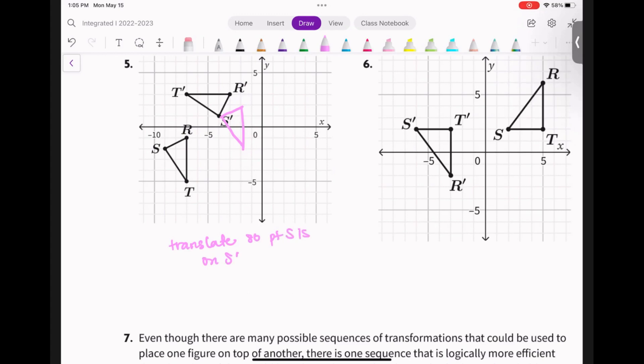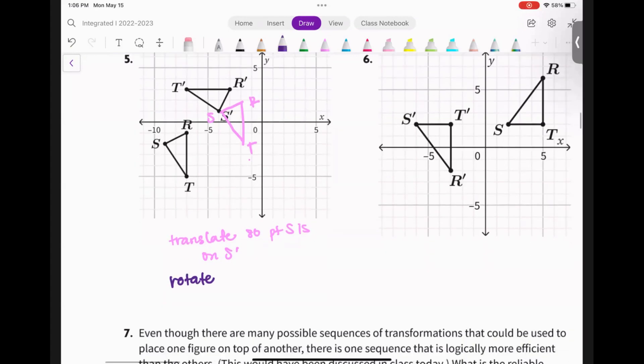Okay, the next thing that I would do is I would rotate it. I would rotate it so that R... oh I should have labeled that, sorry. Let's do this: S, R, T. So then I would rotate triangle RST so that SR coincides with S prime R prime.